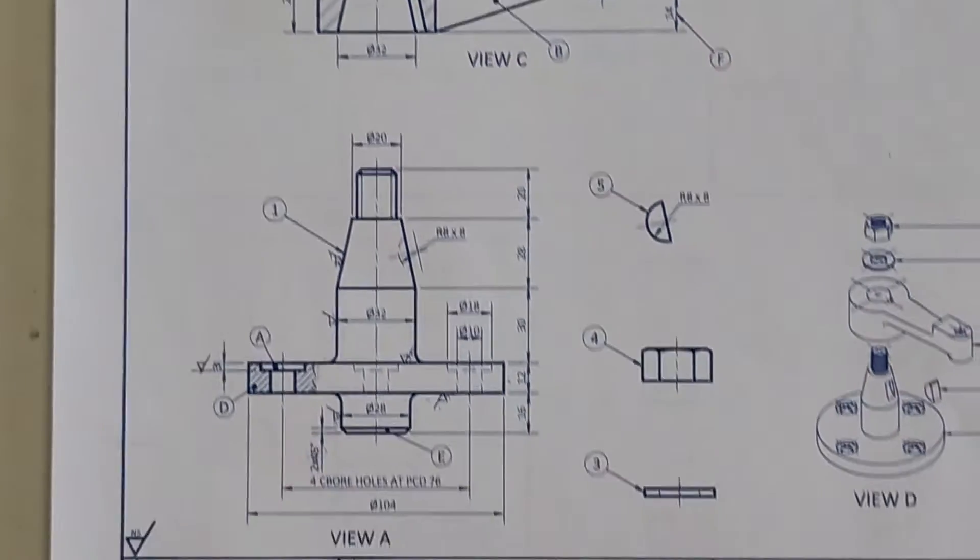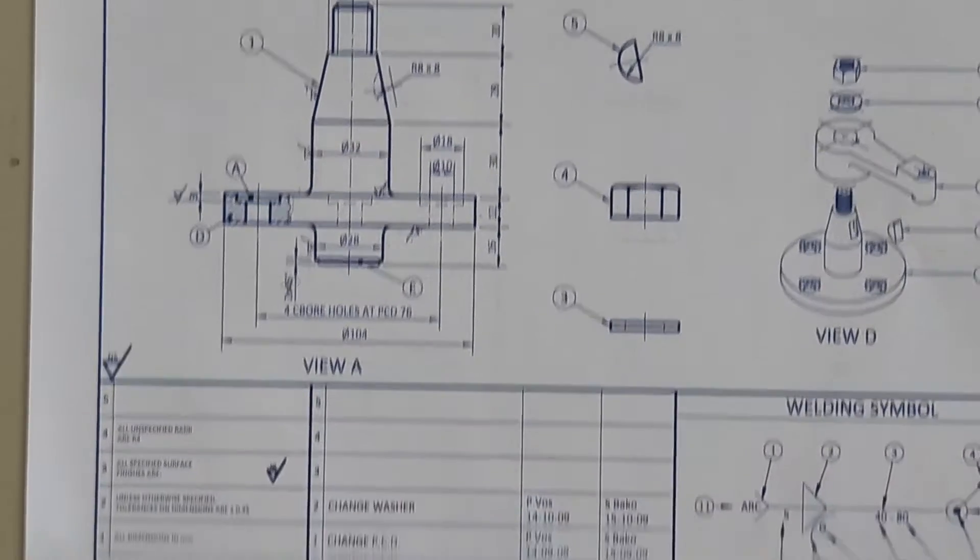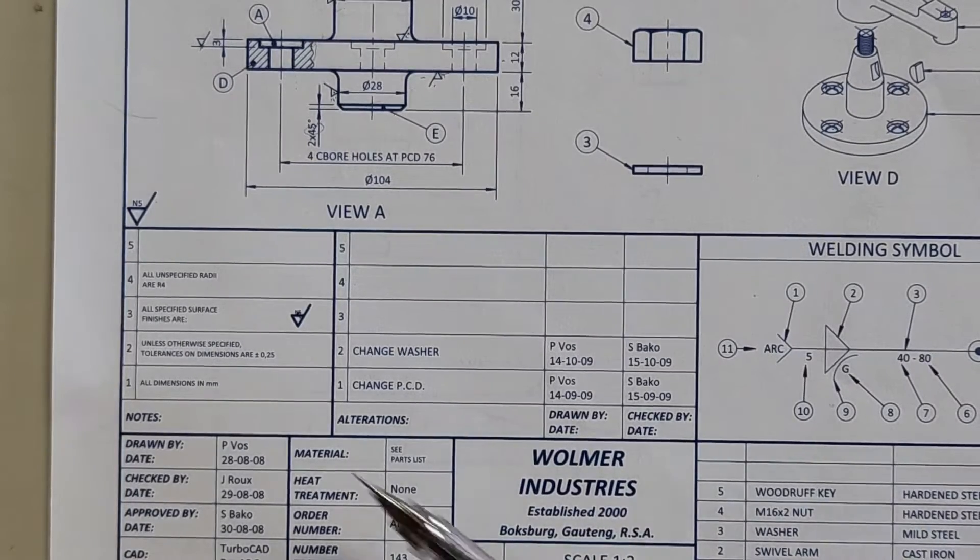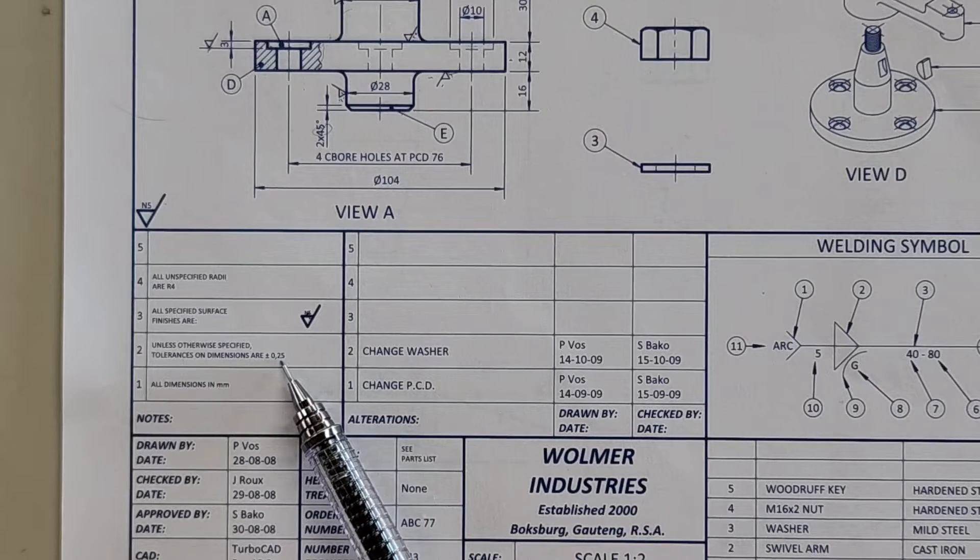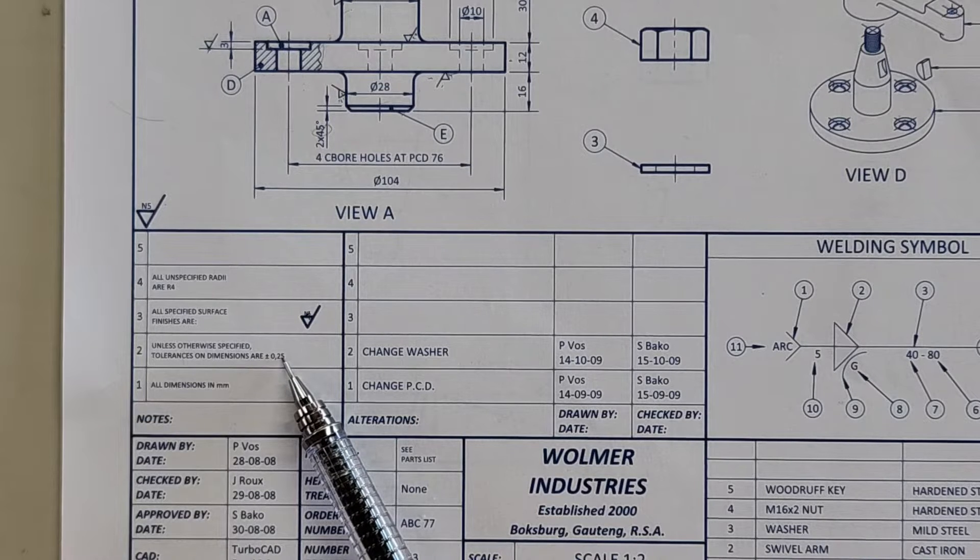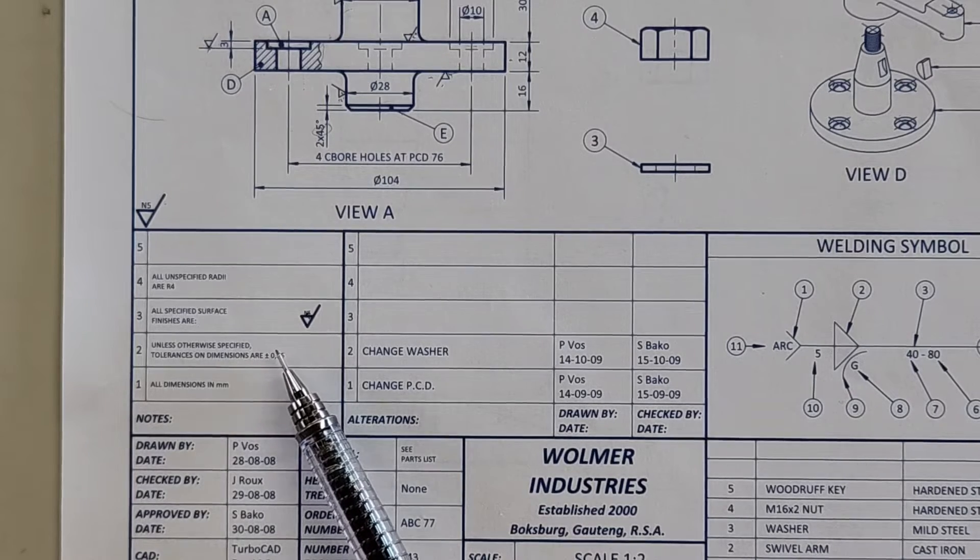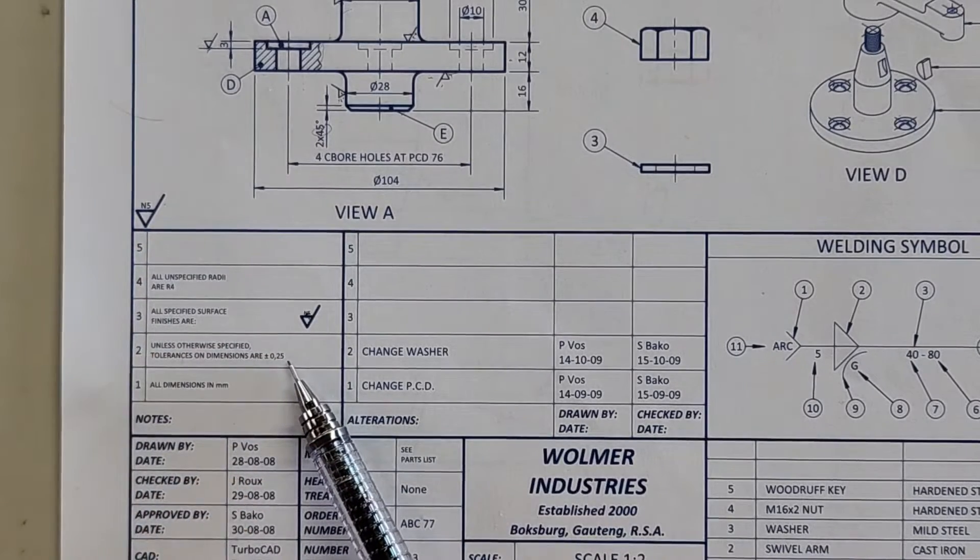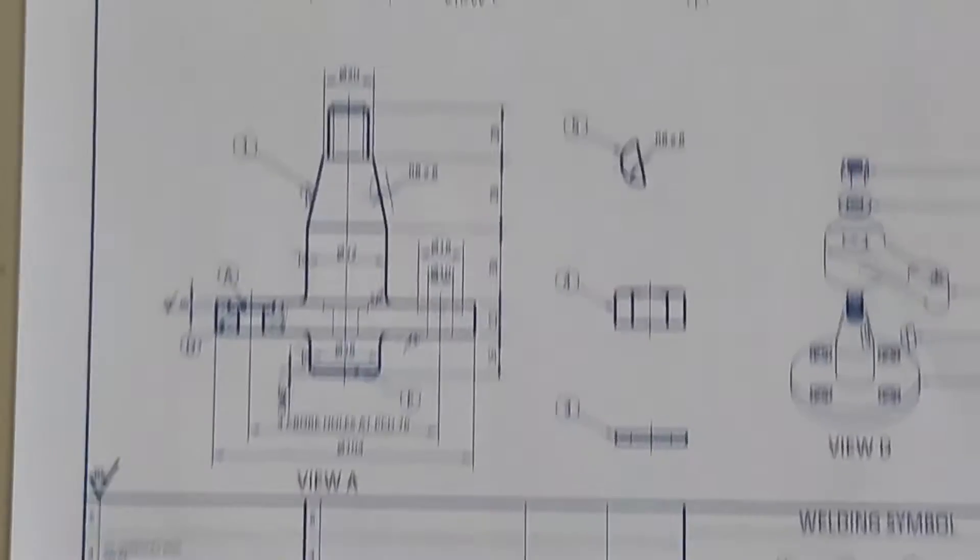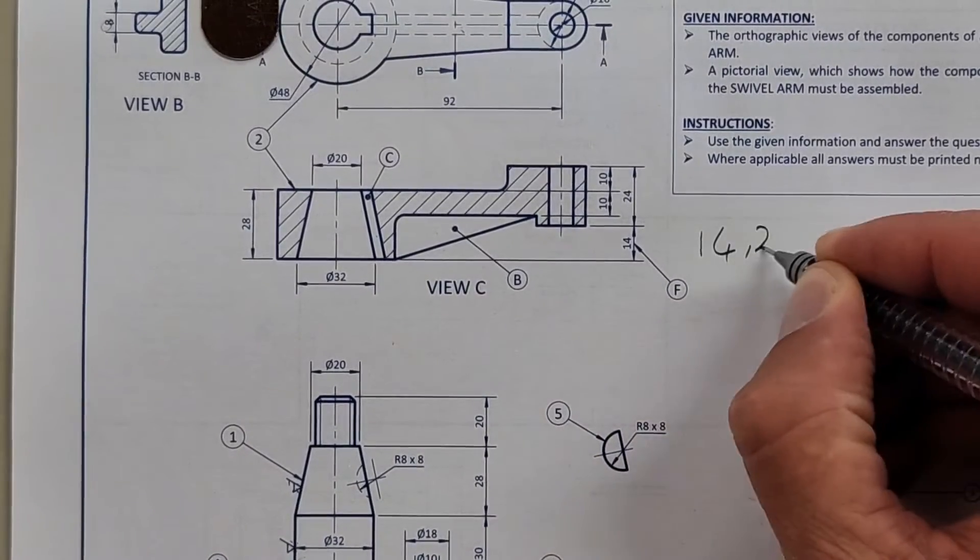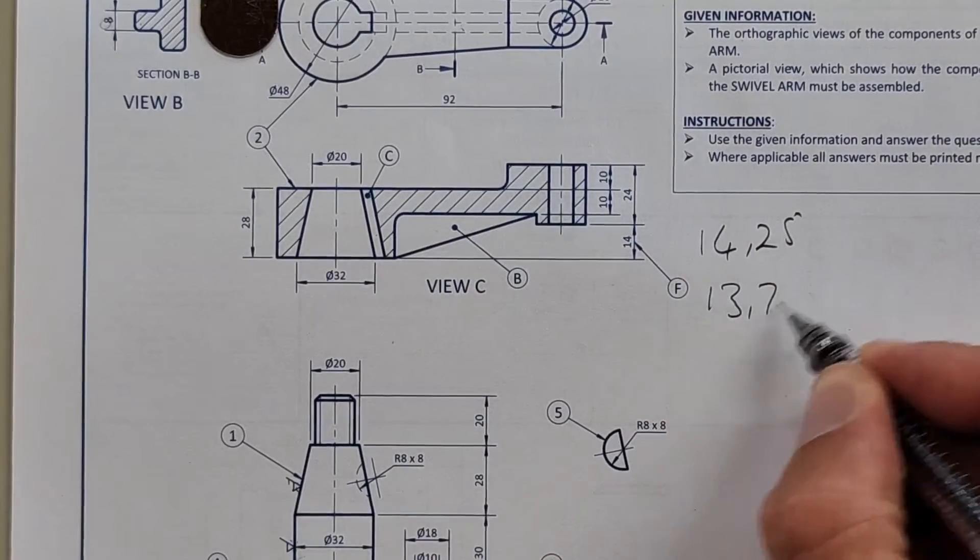What is the permissible tolerance on the dimension of the component? 0.5. So unless otherwise stated, tolerances on dimensions are plus minus 0.25. The question asks what is the permissible tolerance on the dimensions, so the total you have to add the 0.25 for the plus and for the minus, it comes to 0.5. What is the upper limit of dimensions at F? There it is, it's 14, so it's 14.25 the maximum. The minimum is going to be 13.75.